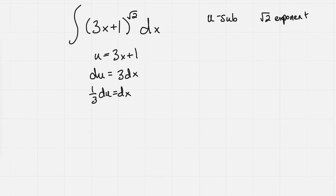So then when I make this substitution, I get 1 third u to the square root 2 du.